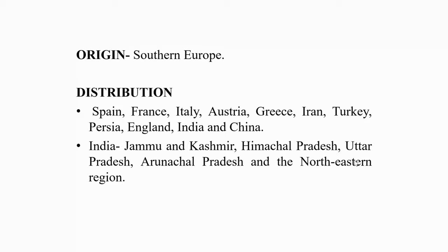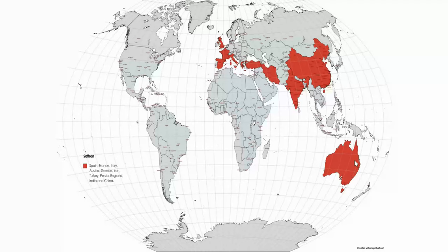Saffron is a native of southern Europe. It is cultivated in Spain, France, Italy, Australia, Greece, Iran, Turkey, Persia, England, India, and China. The La Mancha belt of Spain is the largest producer of saffron in the world, contributing about 80 to 90 percent of the world's saffron production.